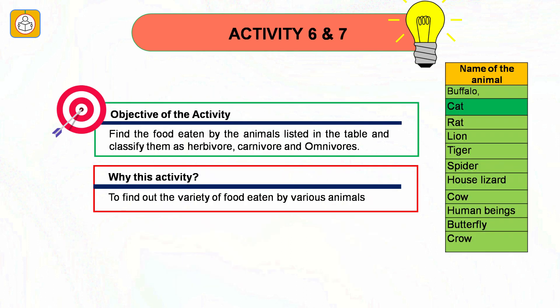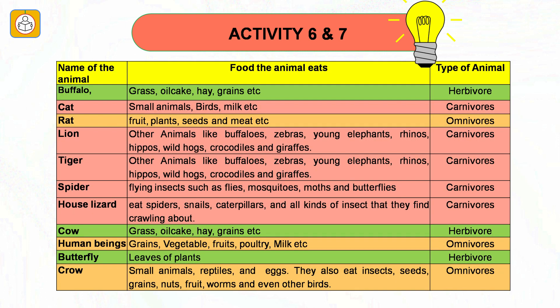Activities six and seven are combined. The objective is to find out the food eaten by animals listed in the table and classify them as herbivore, carnivore or omnivore. We find that buffalo, cow and butterfly are herbivorous animals because they feed only on plants and plant products. Cat, lion, tiger, spider and house lizard are all carnivorous animals. Rat, human beings and crow are omnivorous animals.